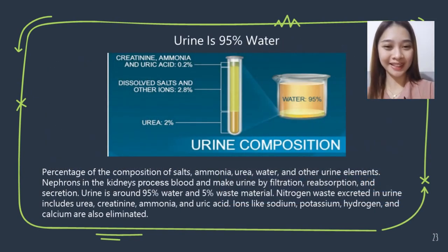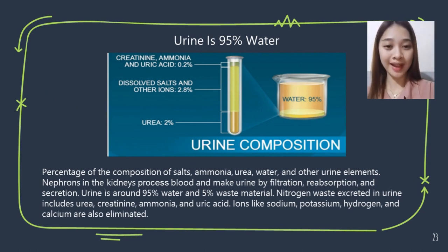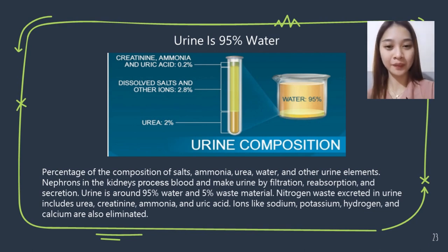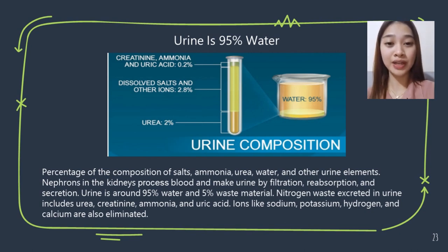Urine is 95% water, 0.2% creatinine, ammonia, and uric acid, 2.8% dissolved salts and other ions, and 2% urea. Nephrons in the kidneys process blood and make urine through filtration, reabsorption, and secretion. Nitrogen waste excreted in urine includes urea, creatinine, ammonia, and uric acid, and ions like sodium, potassium, hydrogen, and calcium are also eliminated.